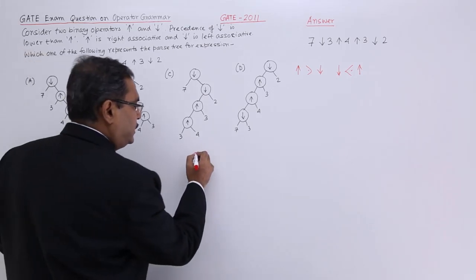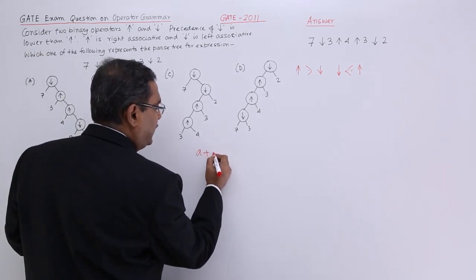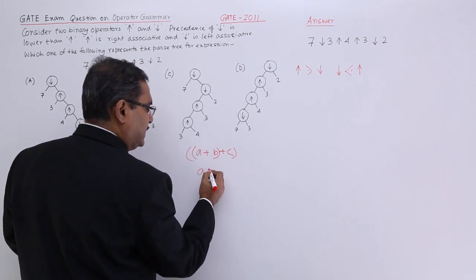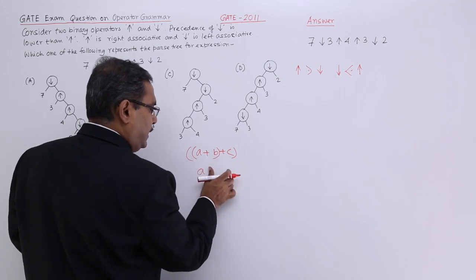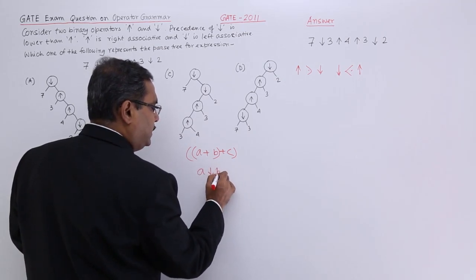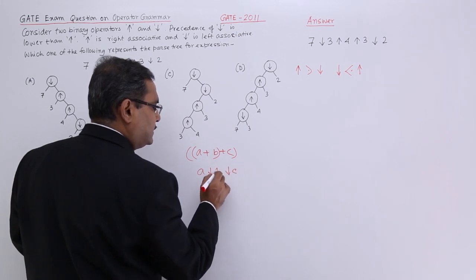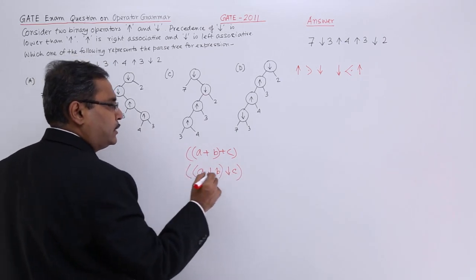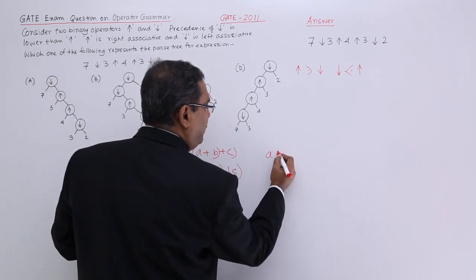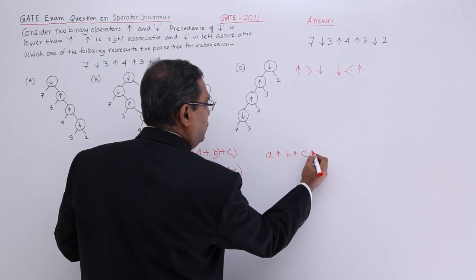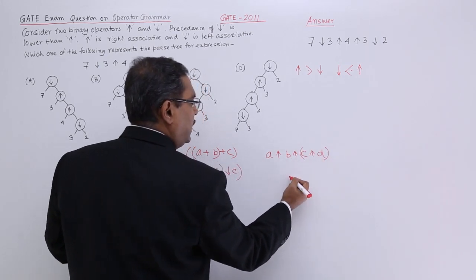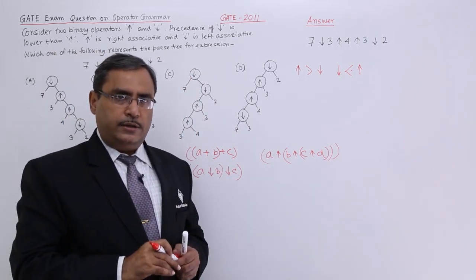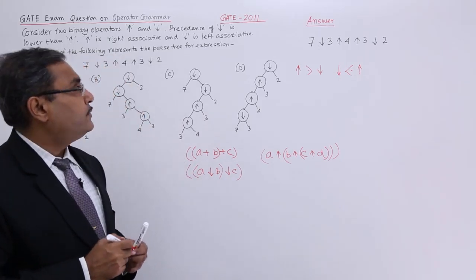Left associative and right associative means: if we have a plus b plus c, then left associative means we will be doing it in this way. So if we have a down arrow b down arrow c, as down arrow is left associative, we shall be going left to right. But in case of up arrow — a up arrow b up arrow c up arrow d — the rightmost operation has to be done first, then the next, then the next. That is called right associativity, so up arrow is right associative.